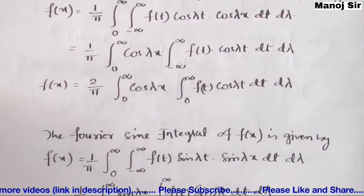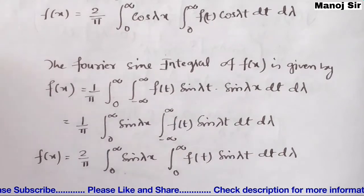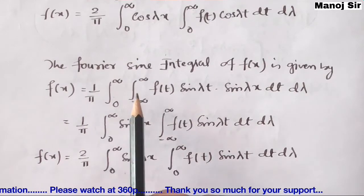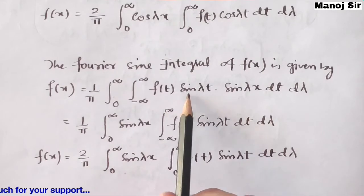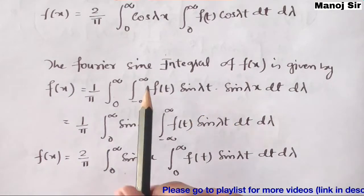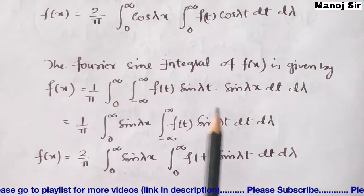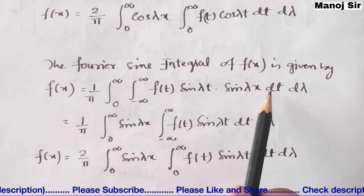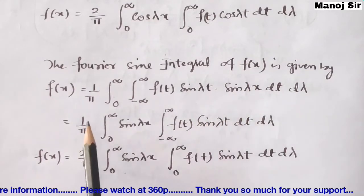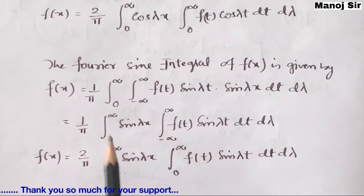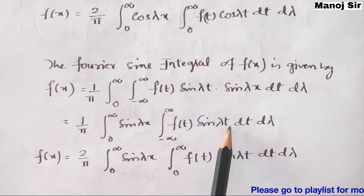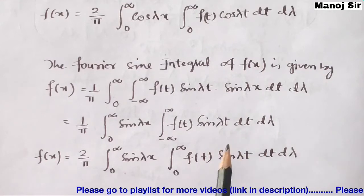The Fourier Sine Integral of f(x) is given by: (1/π) ∫₀^∞ ∫₋∞^∞ f(t) sin(λt) sin(λx) dt dλ. Since the limit from minus infinity to plus infinity is for t, sin(λx) is constant with respect to t and can be taken outside, giving: (1/π) ∫₀^∞ sin(λx) [∫₋∞^∞ f(t) sin(λt) dt] dλ.